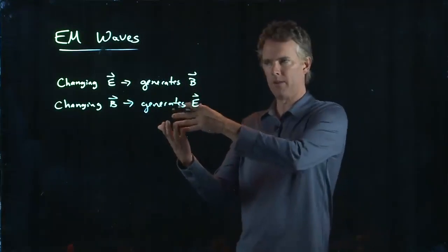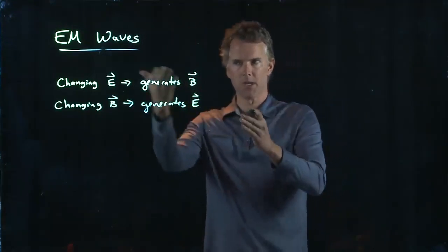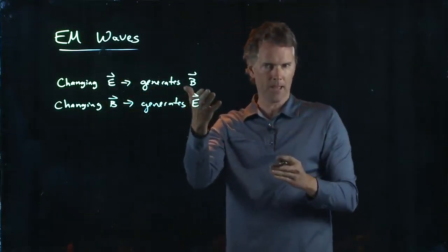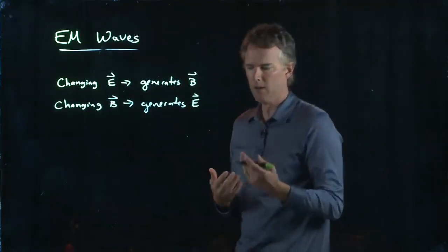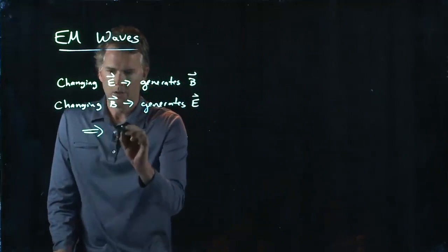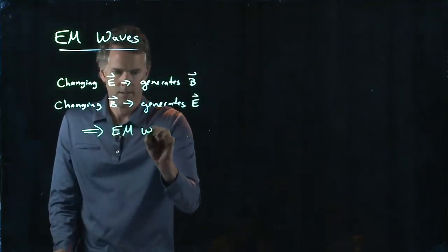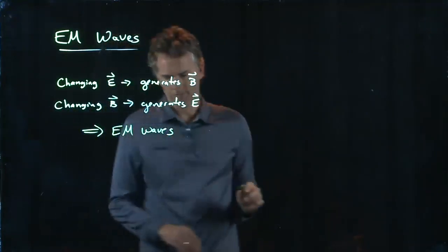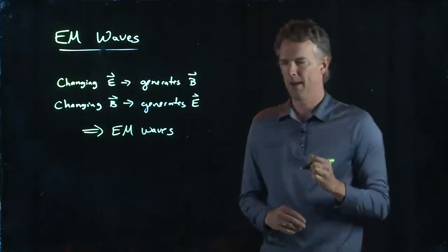If I change B, I can generate E. But if I change E, I can generate B. And maybe these things can balance out just right that you can generate electromagnetic waves. And that is indeed what happens.